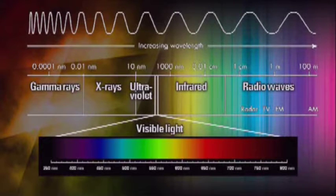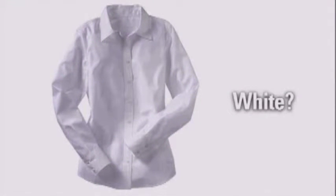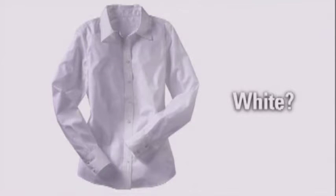If you were able to see gamma rays, UVB light, radio waves, and X-rays, all the white shirts that you're wearing would not be white. There are no white molecules in these shirts, no white electrons. It only appears to you as a color because we have limited perception.